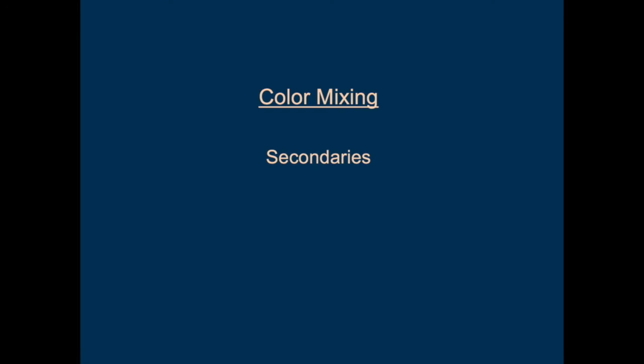Secondary colors are colors mixed from primaries. The main secondary colors are green, orange, and violet. To make green, we mix blue and yellow. To make orange, it's yellow and red. And for violet, it's blue and red. We've all learned this in elementary school.